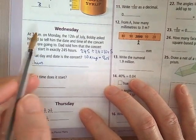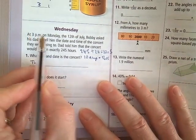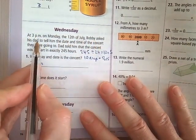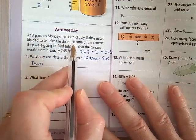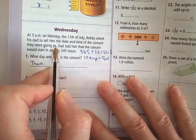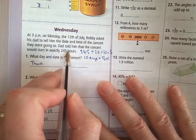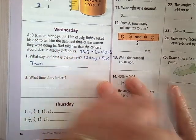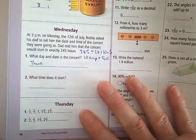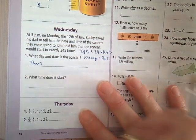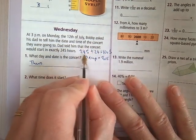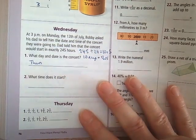And our problem solving for Wednesday. OK, so this is a nice question. At 3 p.m. on Monday the 12th of July, Bobby asked his dad to tell him the date and time of the concert they were going to. And dad, being dad, didn't give him a straight answer. Dad said the concert would start in exactly 245 hours. Because that's what dads do. So 245 hours, what the heck is that? Well, there's 24 hours in a day.